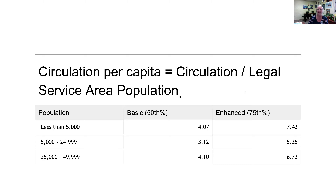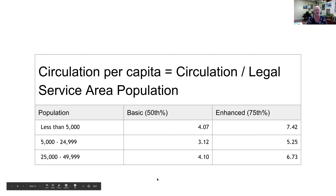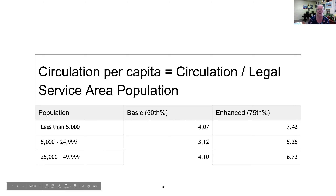Circulation per capita is circulation divided by population. Using tweaked Texas standards, for communities under 5,000, the basic level is 4.07 circulation per person. That averages out — homeschoolers may check out 20 items per family visit while others never come in. In the enhanced column, the number is significantly higher, which says it's not just how many books your community is checking out, but that they like what they're finding in your library.